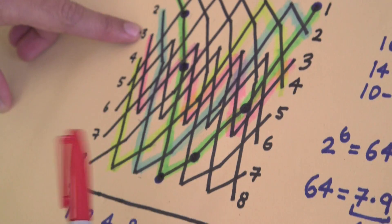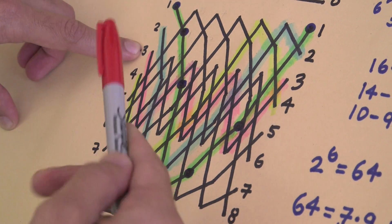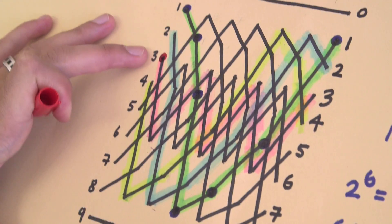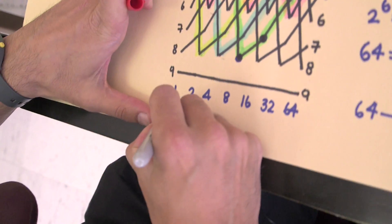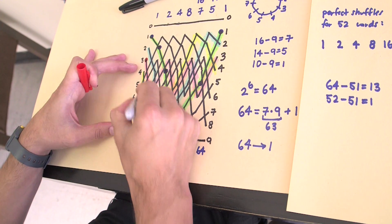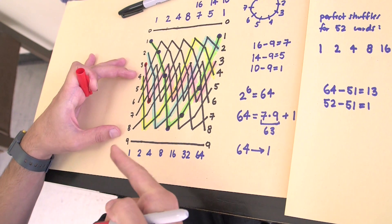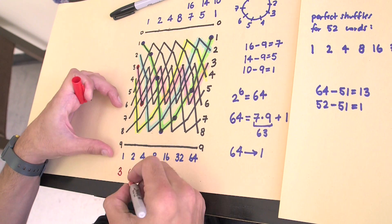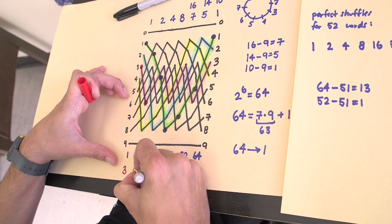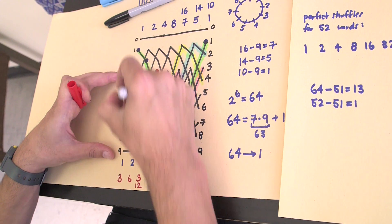That's a really good question. If we go back to what happened to card three in our previous example, card three was doing something different from card one — but let's see that it's actually not so different. Card three starts in position three. After one shuffle, card three goes to position six — it's still doubling. The same rule of doubling holds for every card. After another shuffle, it multiplies by two, which is 12. But 12 is nine plus three, so we go back to three.